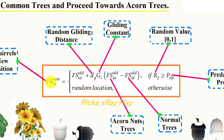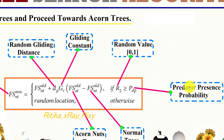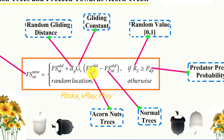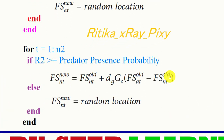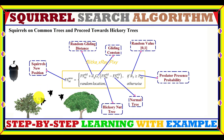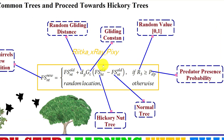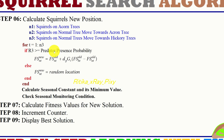The new position for flying squirrels on the normal tree in scenario 2 is calculated using a normally distributed random value, the flying squirrel's position at the acorn tree, and the current position of the squirrel on the normal tree. For the third scenario, flying squirrels on the normal tree move toward the hickory nut tree. The best solution position is used, and again we check predator presence to determine whether to update using the equation or move randomly.